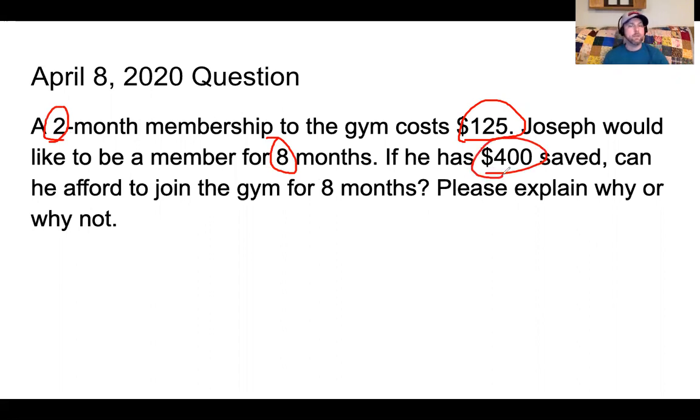This is going to be, without even saying it, this is a two-part question. You first need to figure out how much it costs for an 8-month membership, and then second you need to determine if Joseph is able to afford that using the money that he has saved. What I'm looking for is this part right here: please explain why or why not.